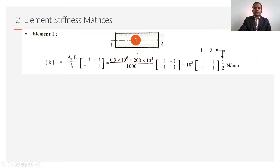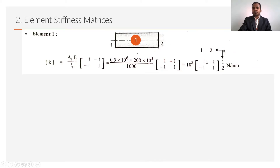Here, area and length are different for each element, so K₁ = A₁E / L₁. Putting in the values — area is 0.5 × 10⁻⁶ m², modulus of elasticity is 200 × 10³ N/mm², and length is 1000 mm — after calculating, you get the matrix 10⁸ × [1, -1; -1, 1]. You should write the node numbers for each element in the matrix; for element 1, write node numbers 1 and 2 above and to the right of the matrix.